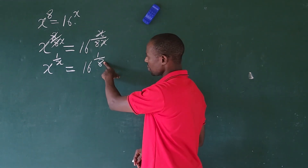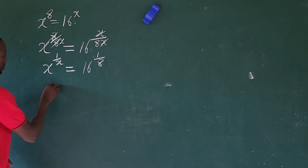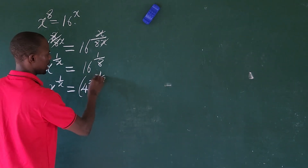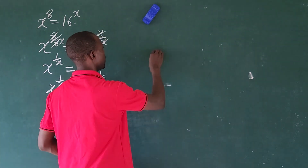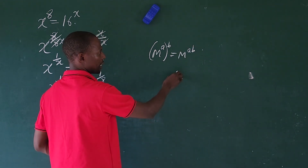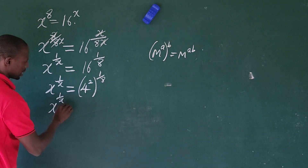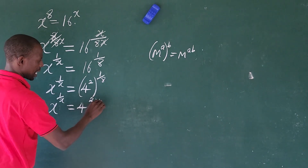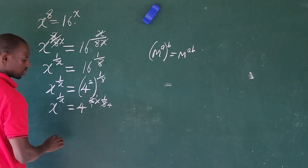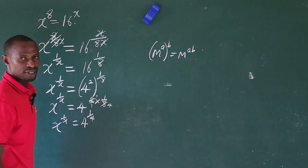The challenge here is that the denominator is 8 but the base is 16, so we rewrite 16 as 4 to the power of 2. We now have x to the power of 1 over x equal to 4 squared, all to the power of 1 over 8. According to the law of indices, m^a raised to power b equals m^(ab), so we multiply the exponents: 2 times 1 over 8 gives 2 over 8, which simplifies to 1 over 4. This gives us x to the power of 1 over x equal to 4 to the power of 1 over 4.